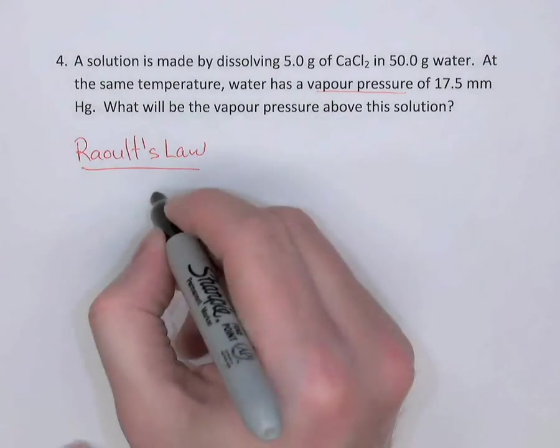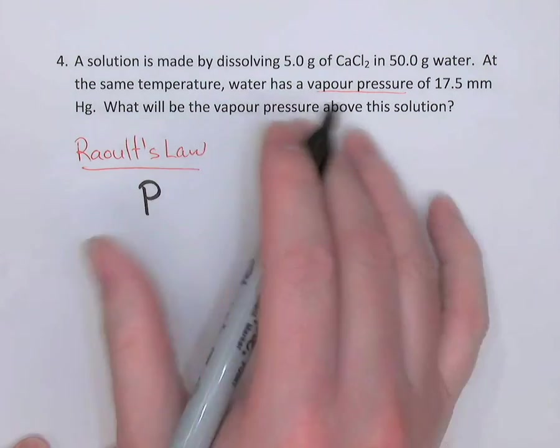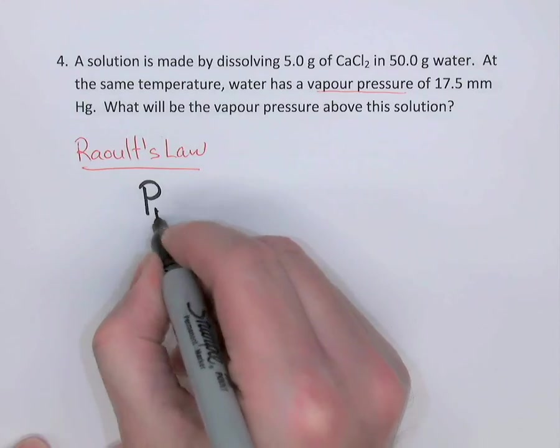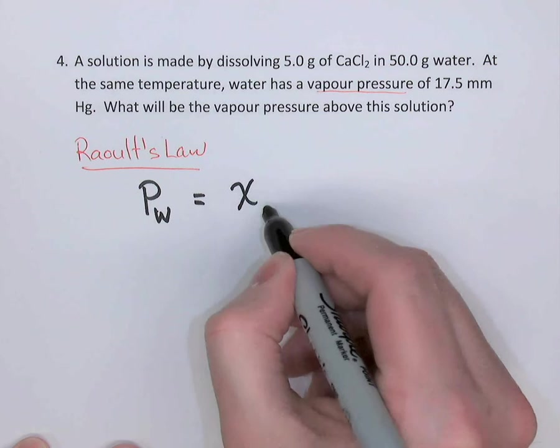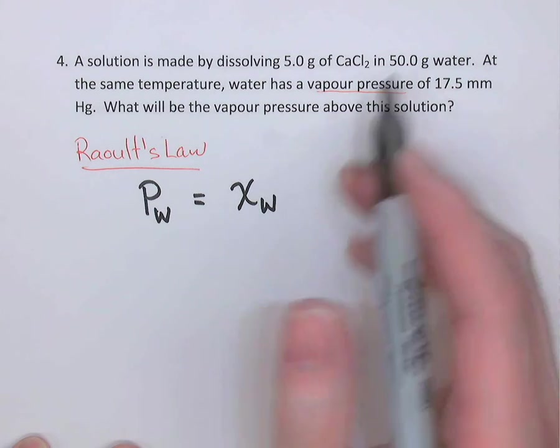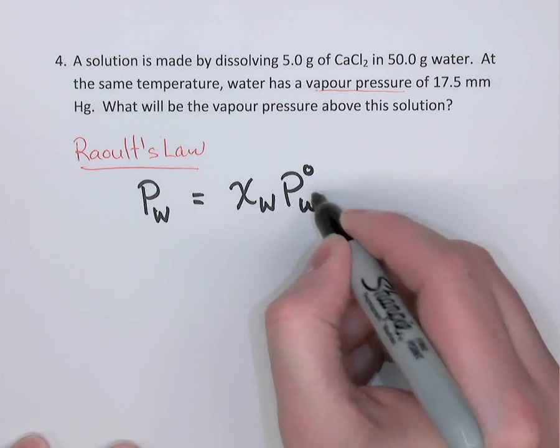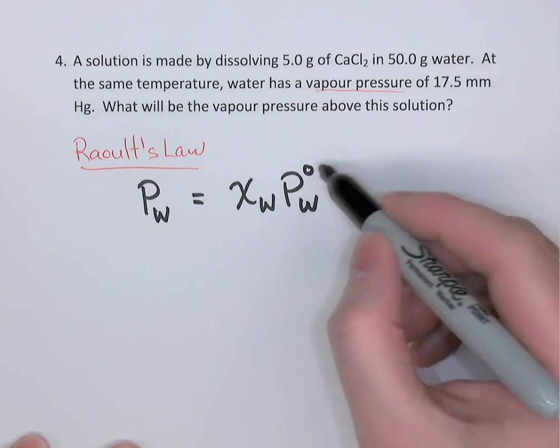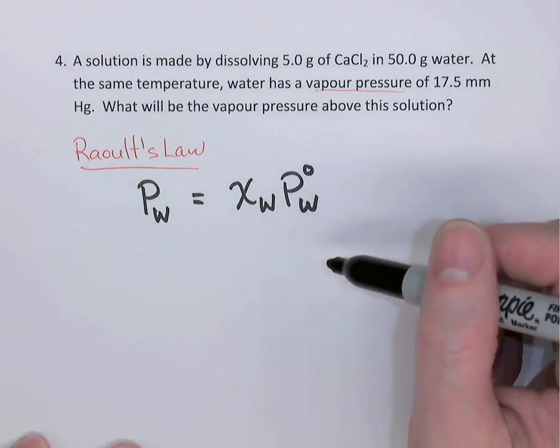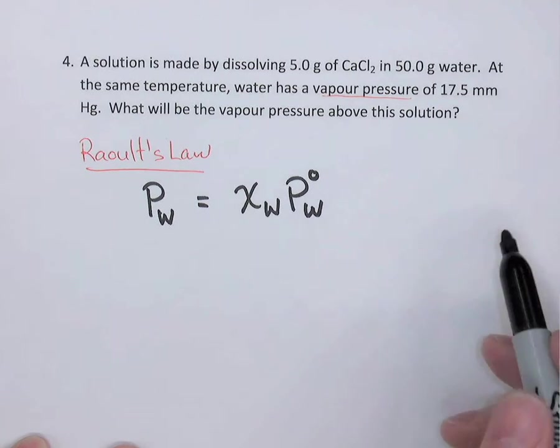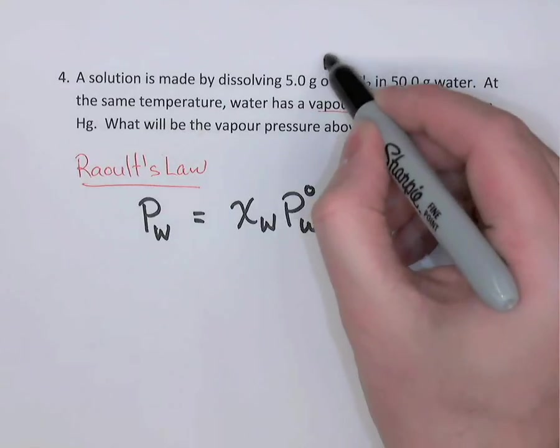Raoult's Law says that the vapor pressure above the solution—now, the thing that's evaporating in this solution is water, so we'll say Pw—is equal to the mole fraction of the water, of the solvent, multiplied by the vapor pressure of the pure solvent, or in this case, the pure water. And that degree symbol signifies the vapor pressure of pure water. It's important to understand that in this question, the solute, calcium chloride, is non-volatile.